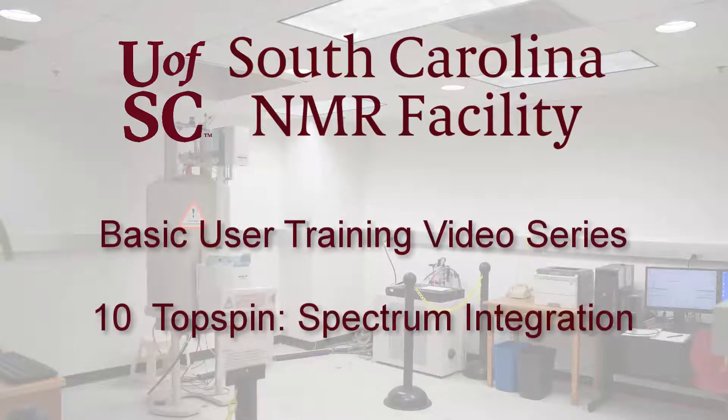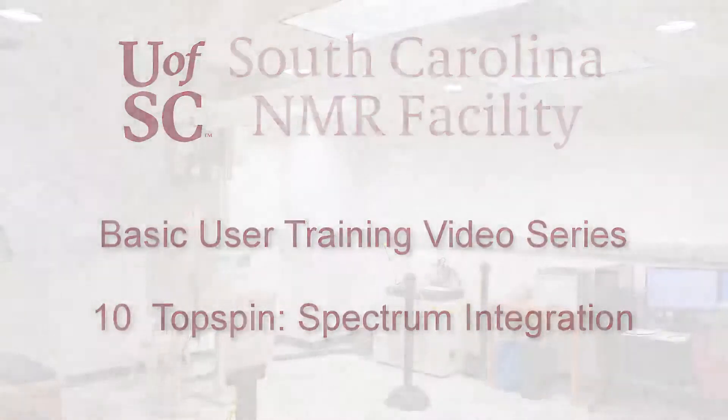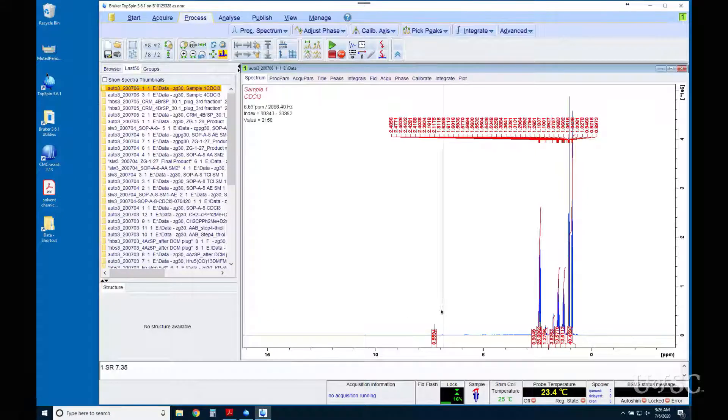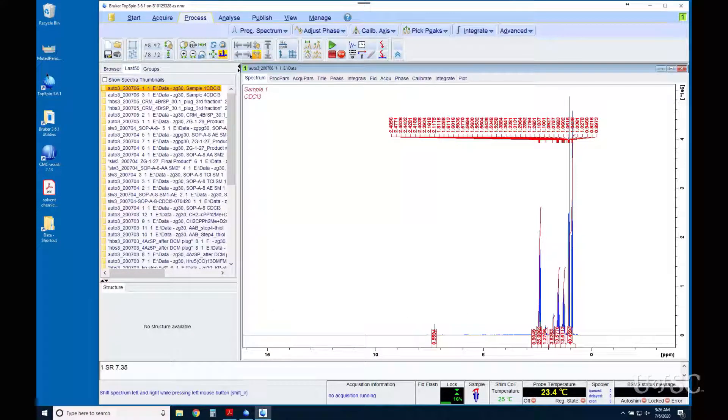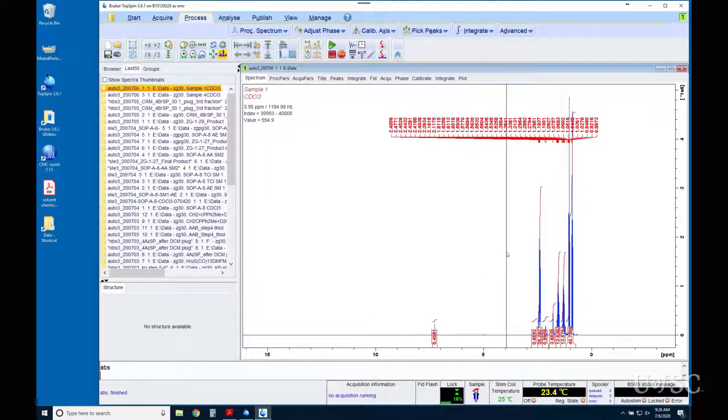In this video we will cover NMR peak integration. The output of ICON NMR collected proton spectra will have integrals set by a command called ABS. This command decides what peaks are significant enough to integrate and cuts up the spectrum into regions that contain one or more resonances.